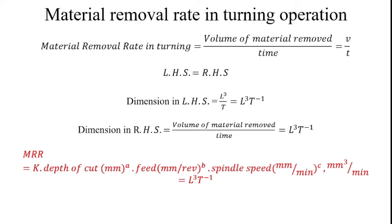You may consider different responses for your experiment, but for understanding I will use material removal rate as the example. Material removal rate in turning operation can be defined as the volume of material removed divided by time.